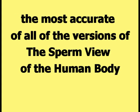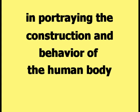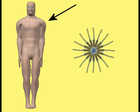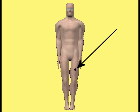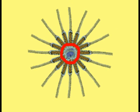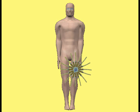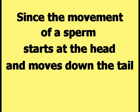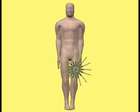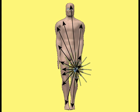This makes the fertilizing egg version the most accurate of all versions in portraying the construction and behavior of the human body. For example, if the center of some movement or stimulation was on the leg, the heads of the sperms would be placed at that location, and the movement travels outwards from the leg to the rest of the entire body.